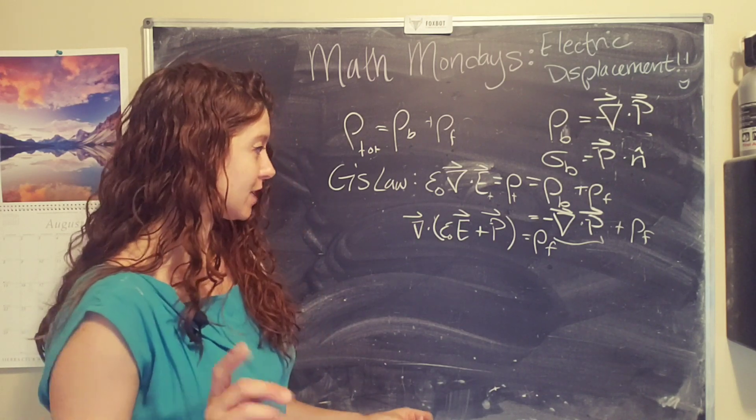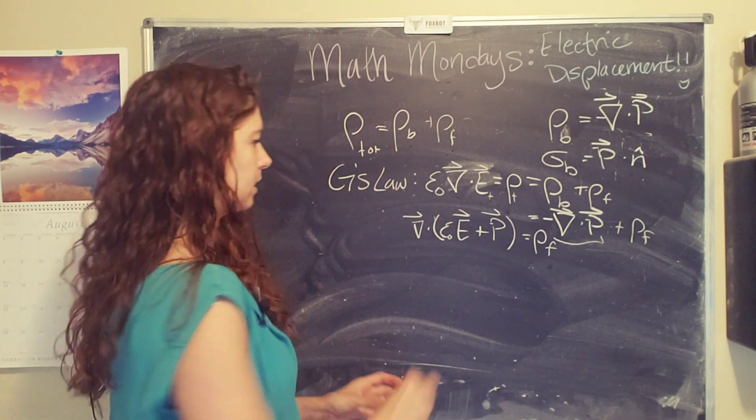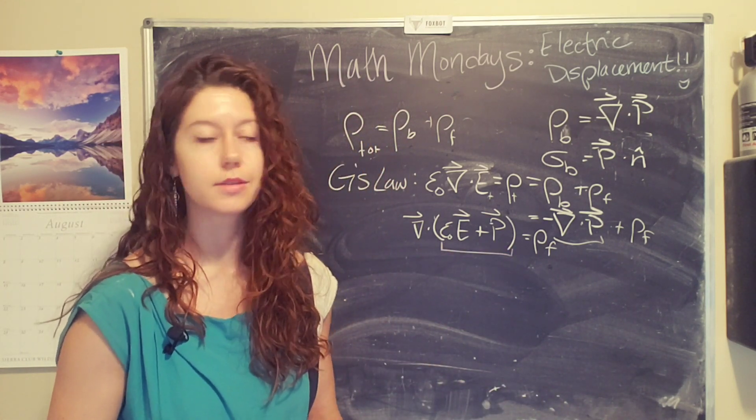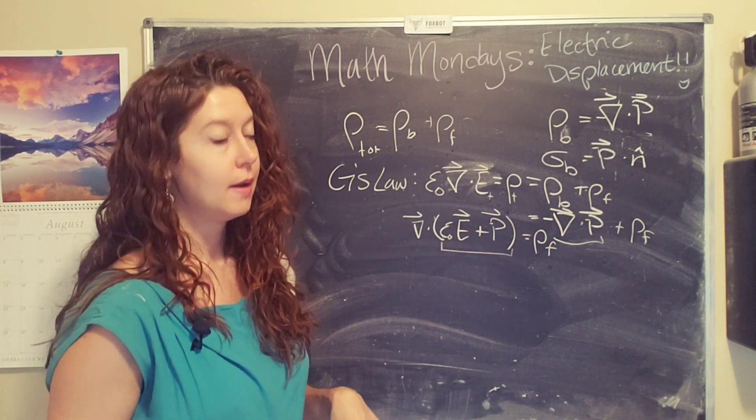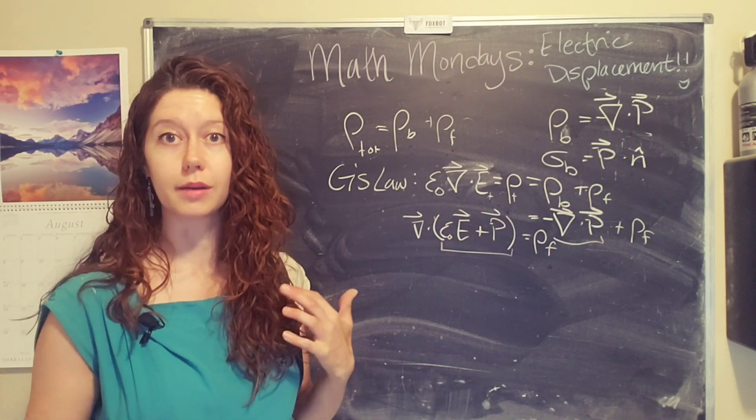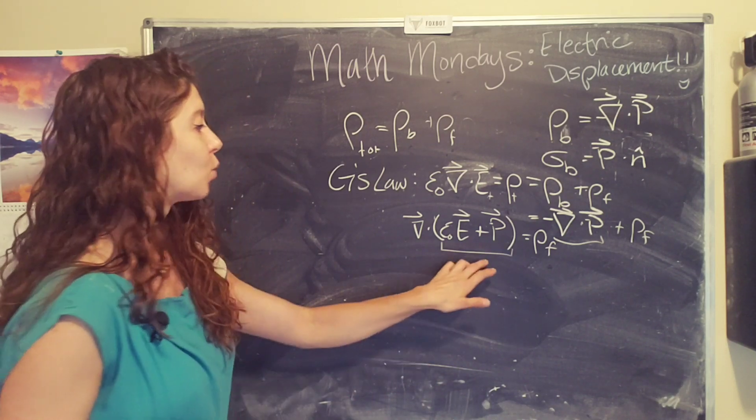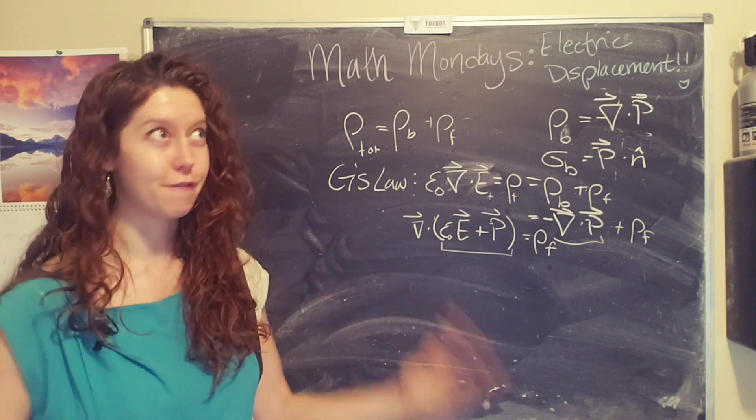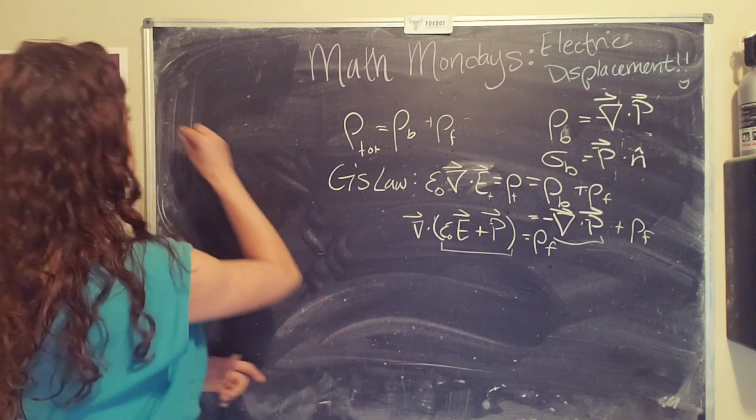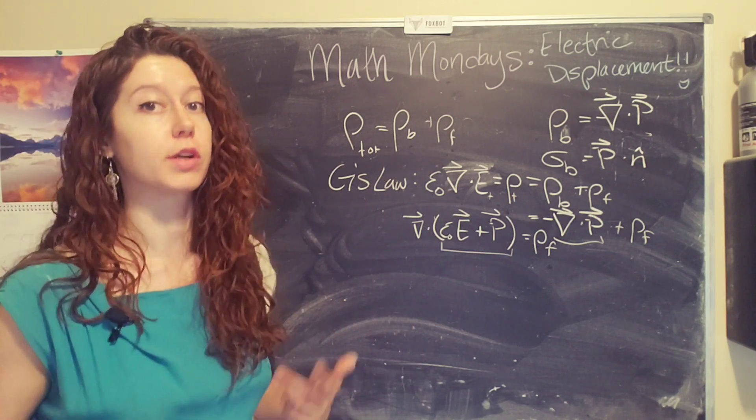Okay, so this is where we're like, okay, this would be cumbersome to write all the time. We want to be lazy, and also it's probably going to pop up again. So we want a way to talk about this term, shorthand so that we can communicate more effectively and do problems more easily. So what we're going to do is just define a new term that is this quantity.